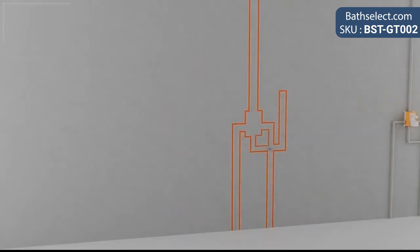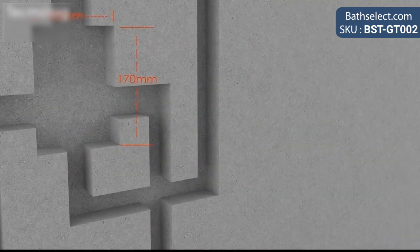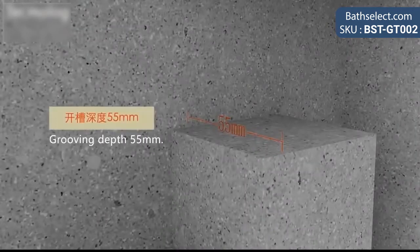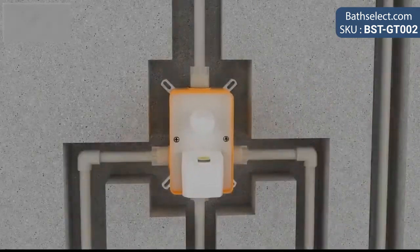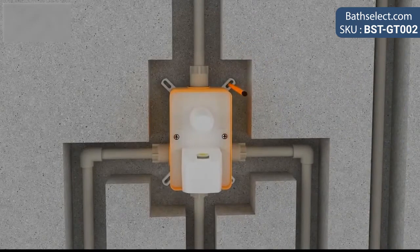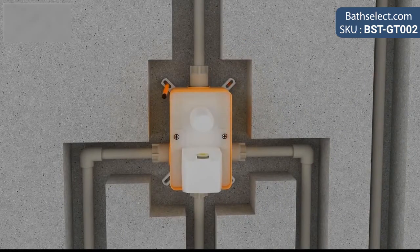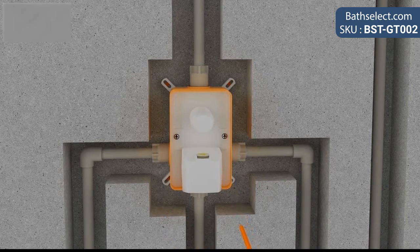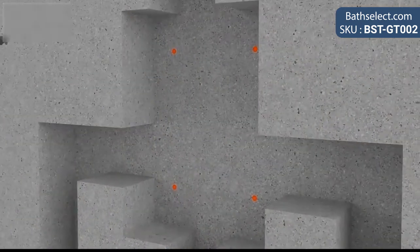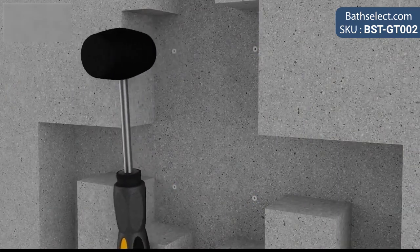Flow rate 2.5 GPM. Shower head length: 8, 10, 12, or 16 inches. Material: solid brass. Finish: polished chrome. Shower head style: contemporary rain shower head.